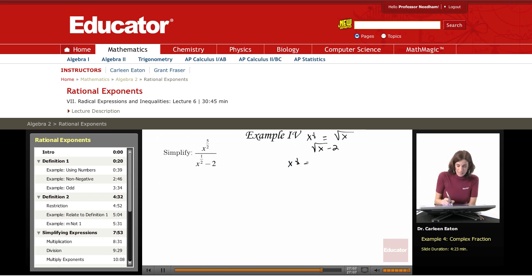x to the 1 half minus 2. The conjugate is going to be x to the 1 half plus 2, which is the same as up here if I were to say that the conjugate would be the square root of x plus 2. Same idea.